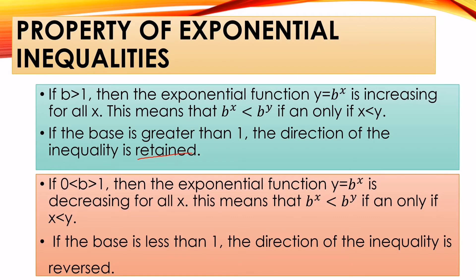While if b, our base, is greater than zero but less than one, then the exponential function y = b^x is decreasing for all x. This means that b^x < b^y if and only if x < y. So meaning, when the base is less than one, the direction of the inequality symbol will change.